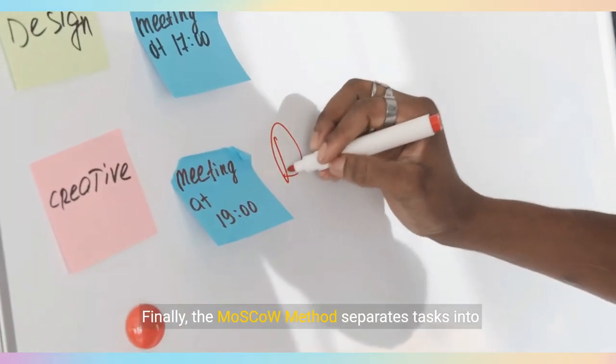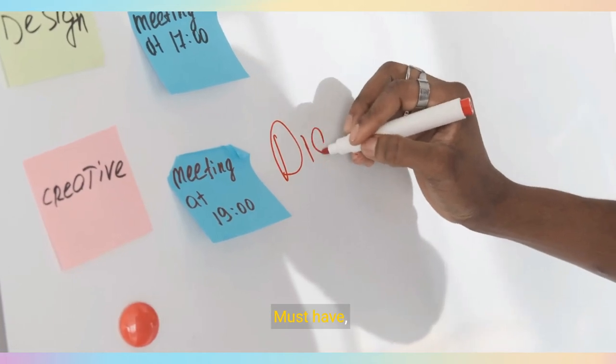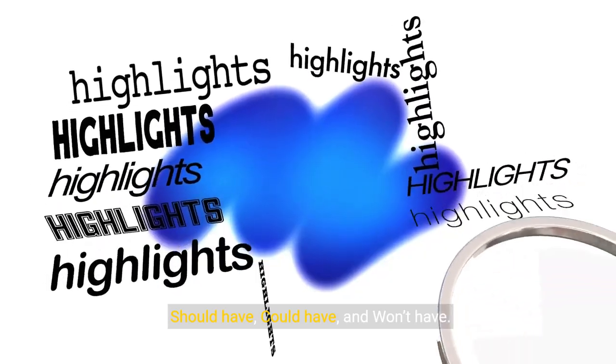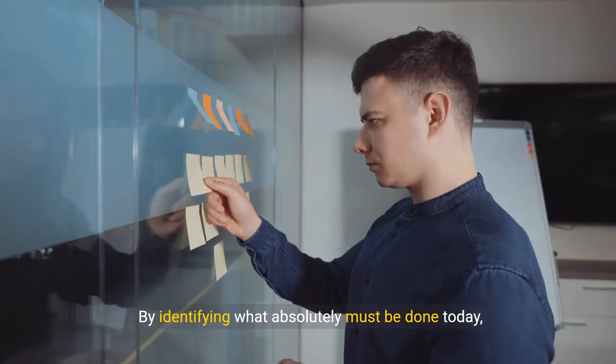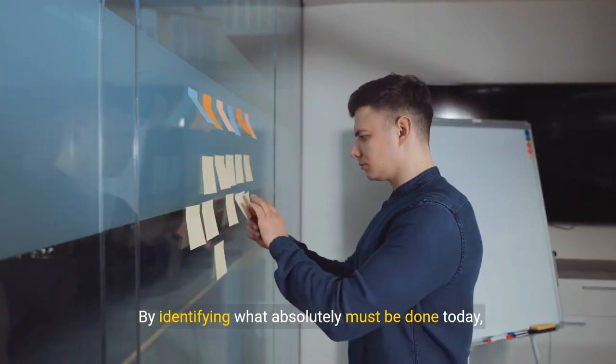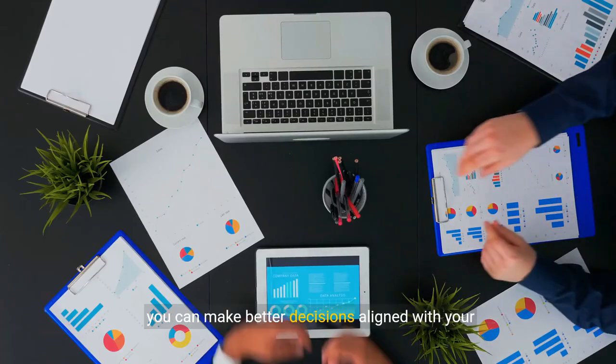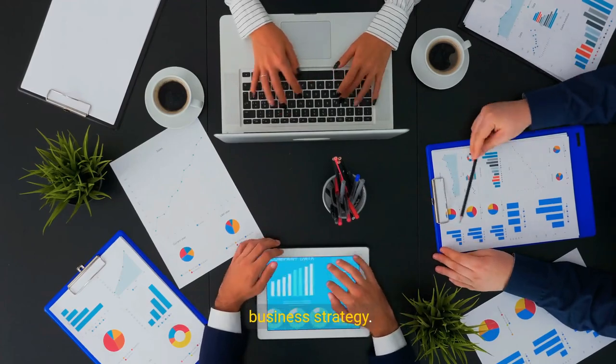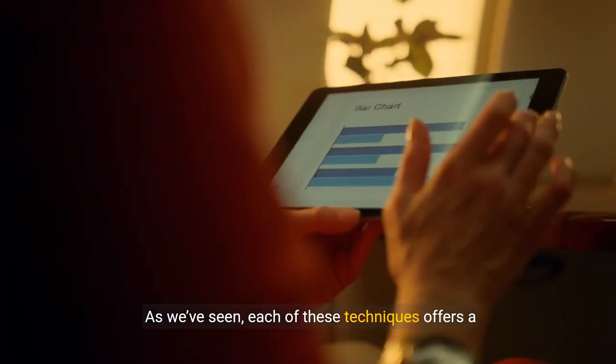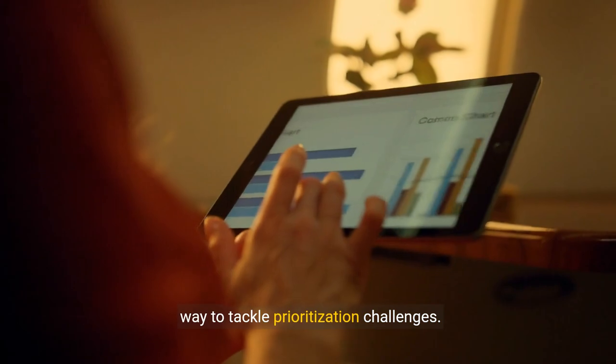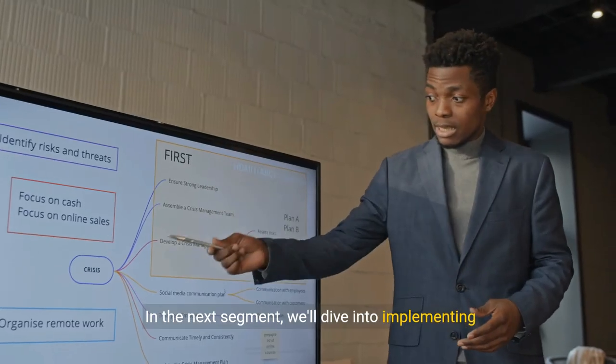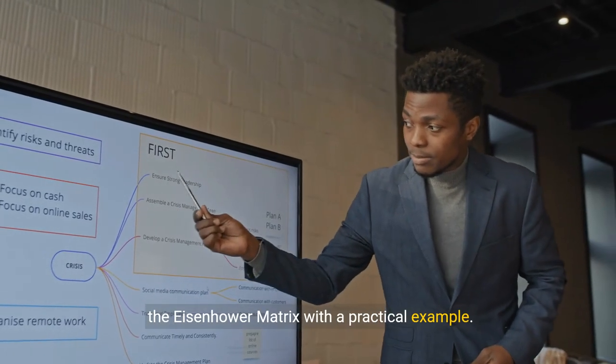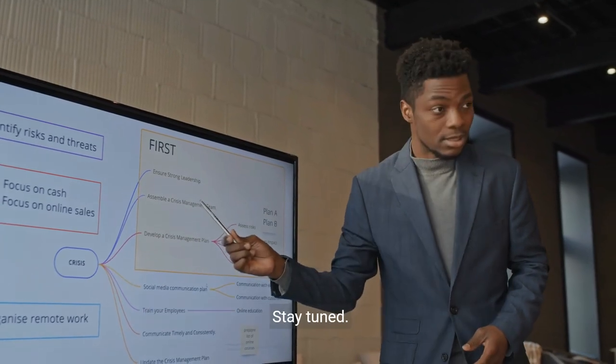Finally, the Moscow method separates tasks into must-have, should-have, could-have, and won't-have. By identifying what absolutely must be done today versus what can wait, you can make better decisions aligned with your business strategy. As we've seen, each of these techniques offers a way to tackle prioritization challenges. In the next segment, we'll dive into implementing the Eisenhower matrix with a practical example.